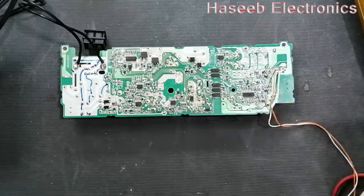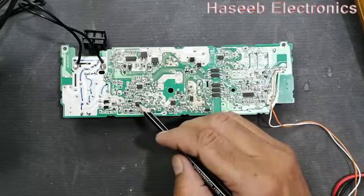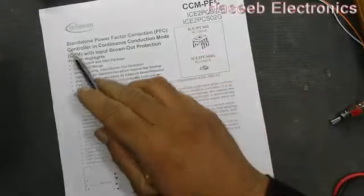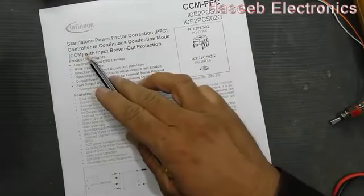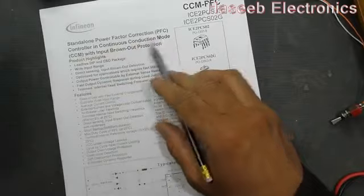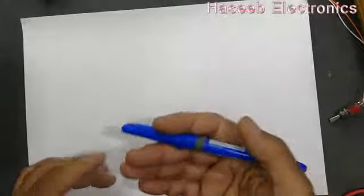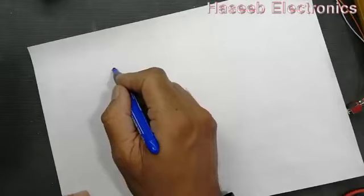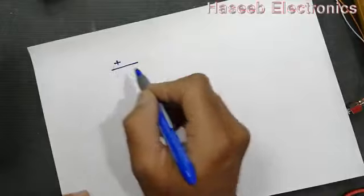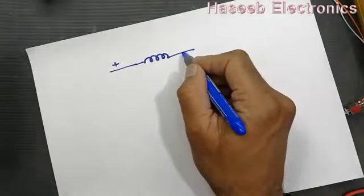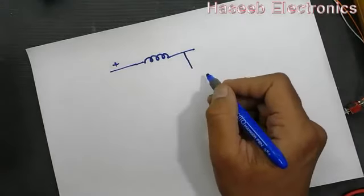The IC is the 2PCS02, a standalone power factor correction controller operating in continuous conduction mode (CCM). This type of PFC circuit is very commonly used in inverters, AC boards, and LED power supplies. We have a positive voltage that we pass through an inductor, and after the inductor we connect a MOSFET.